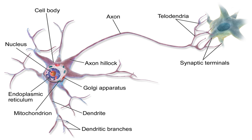The axon also branches, but usually maintains a constant diameter. Neurons can lack dendrites or have no axon. An en-passant bouton is a type of terminal located along the length of the axon. The term neurite is used to describe either a dendrite or an axon, particularly in its undifferentiated stage.